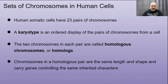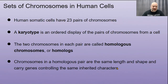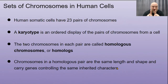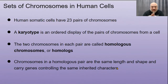Human somatic cells — like skin, hair, eyes, liver, stomach — have 23 pairs of chromosomes. A karyotype is a picture of those chromosomes from a cell. Two chromosomes in each pair are called homologous chromosomes, or homologs. You have 23 pairs: one chromosome in each pair came from your dad, one from your mom. They carry the same genes — for hair color, eye color, and so on — but possibly different versions of those genes.